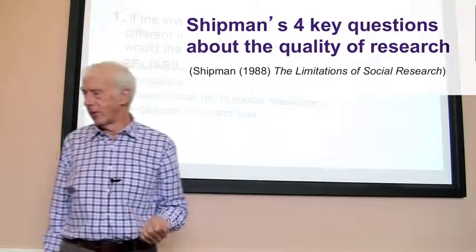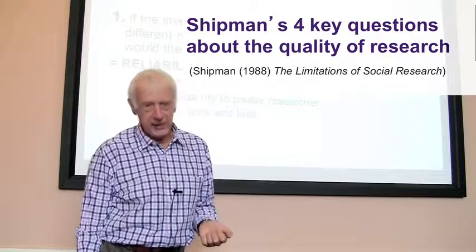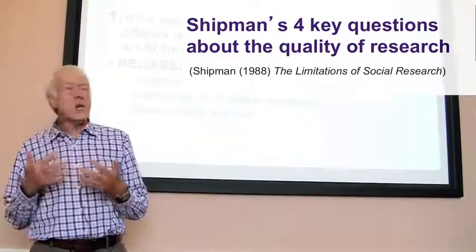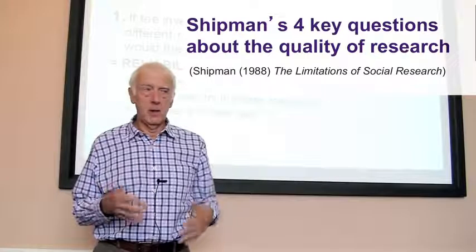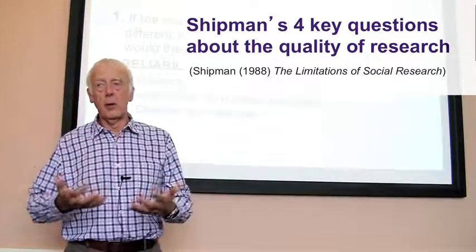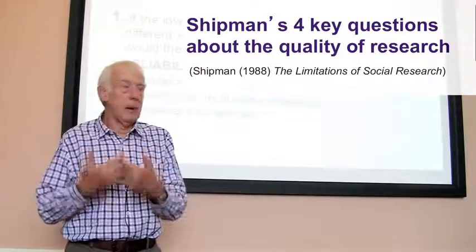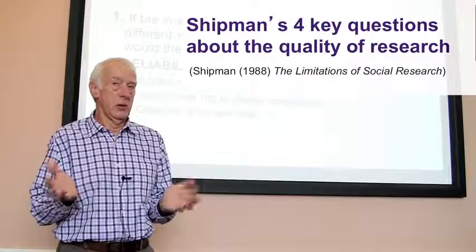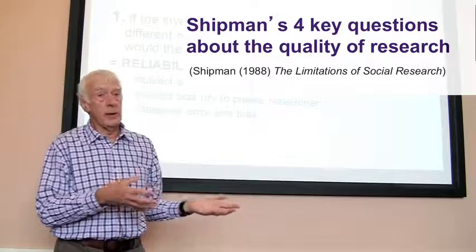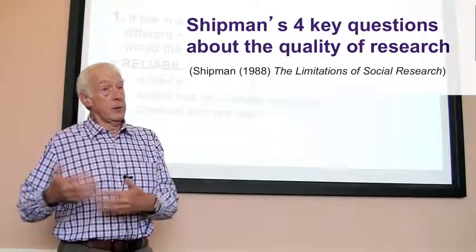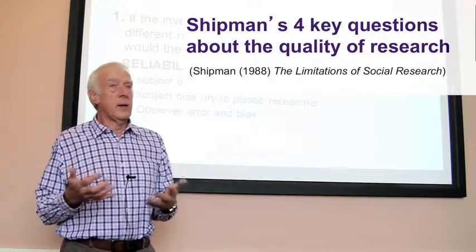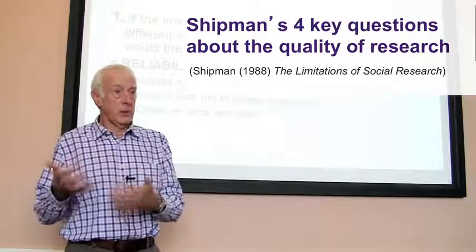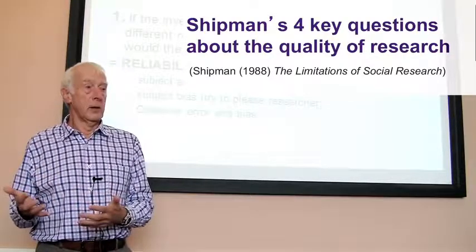I'm going to start by talking about a rather ancient book — Shipman, 1988 — which I think is still being published. He makes a nice point about there being four major questions about research quality. Essentially, the questions are to do with how we can be sure that published research is good quality, as opposed to poor quality research.